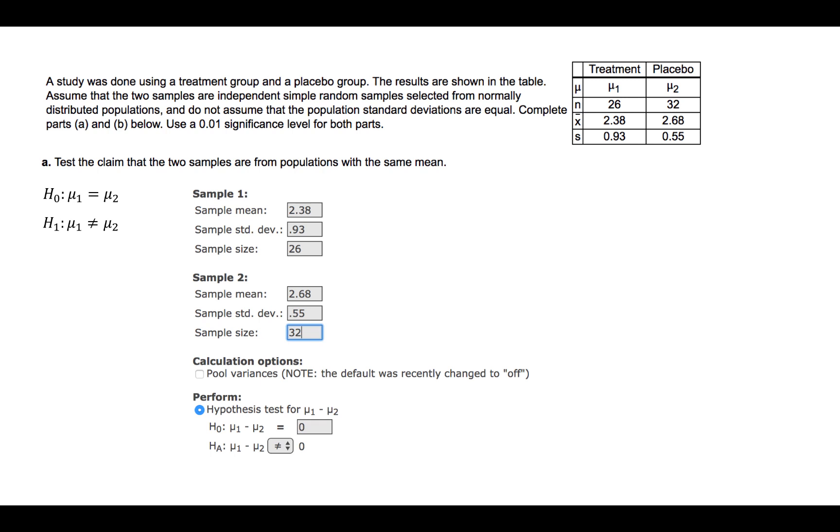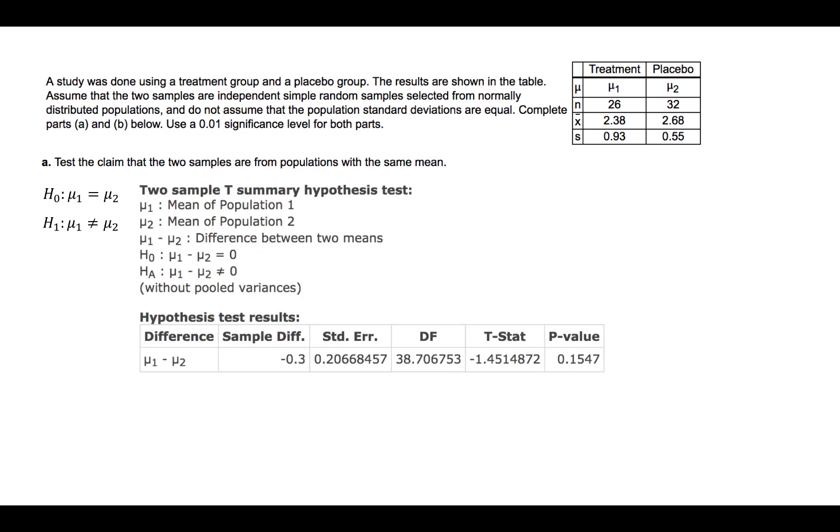So mu1 equal to mu2 is equivalent to mu1 minus mu2 equal to zero. And mu1 not equal to mu2 is equivalent to mu1 minus mu2 not equal to zero. The resulting output box gives us a t-statistic of minus 1.45 when we round to two decimal places.